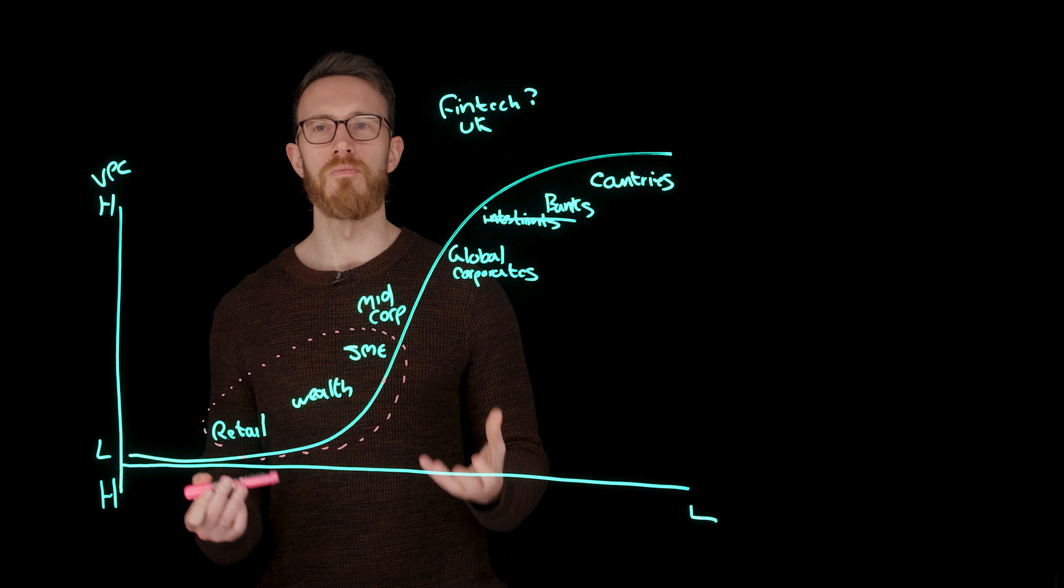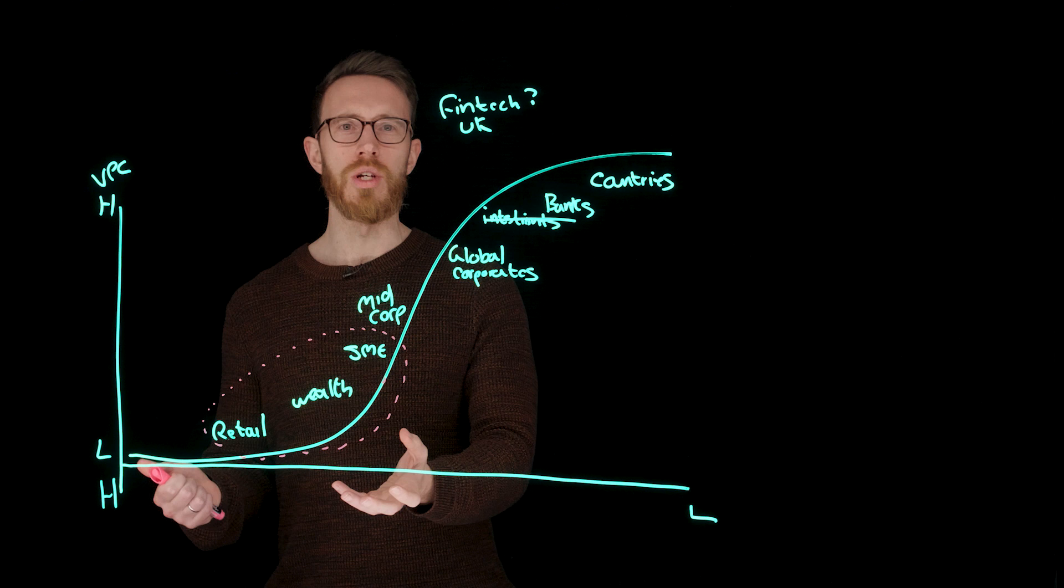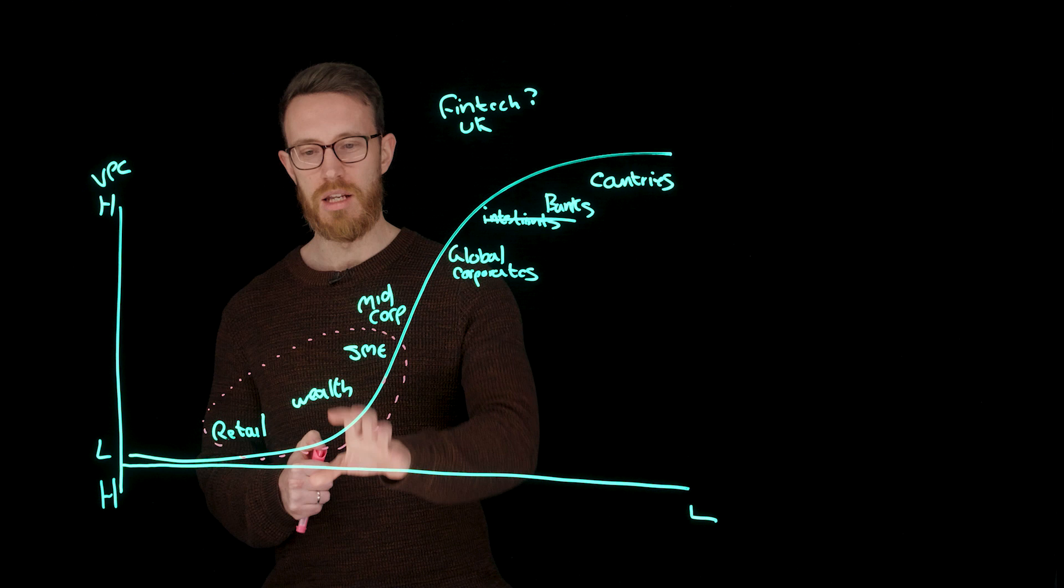In the retail space, the obvious examples of Monzo, Starling, Revolut really play. But also, maybe the mortgage space. You might see Trussle, you might see Habito.